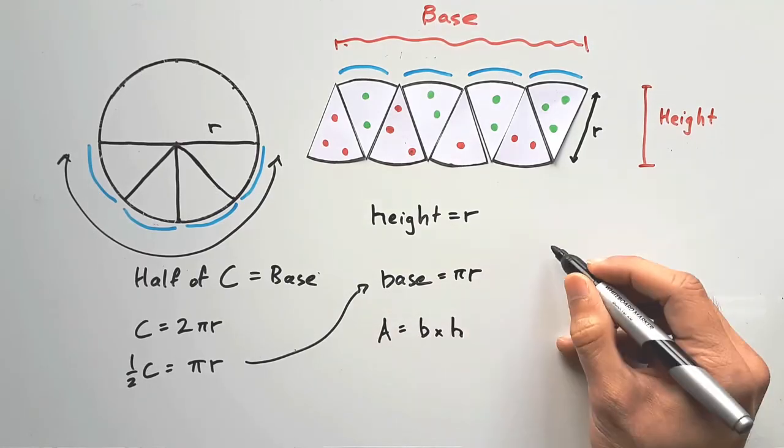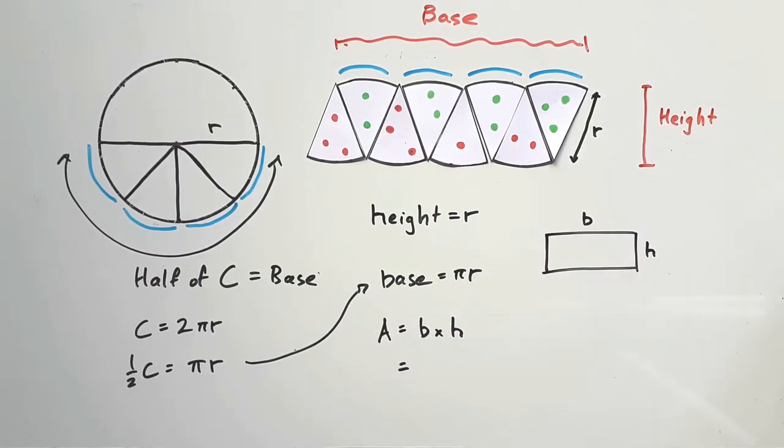Now, the area of a rectangle is base times height. So, for our wacky paper pizza rectangle, πr times r gives us πr squared. Done!